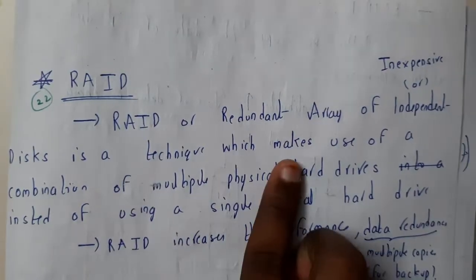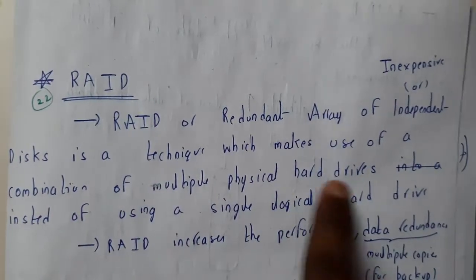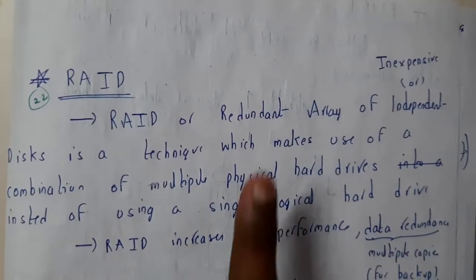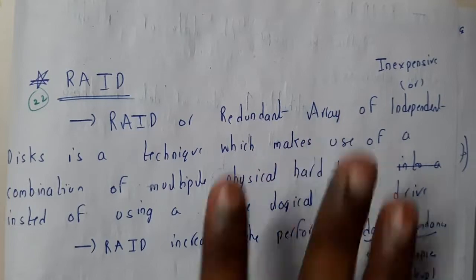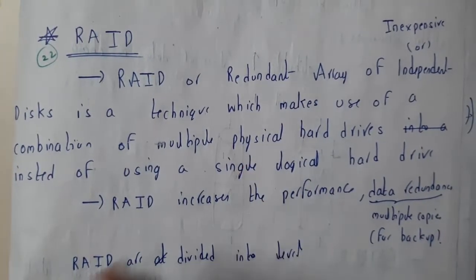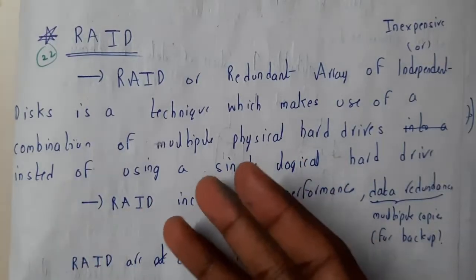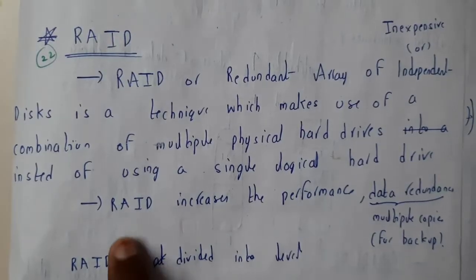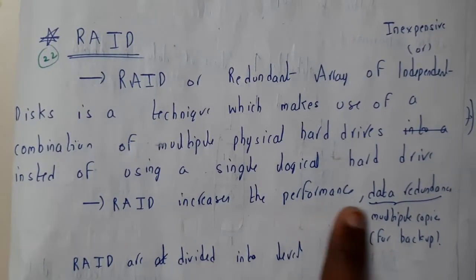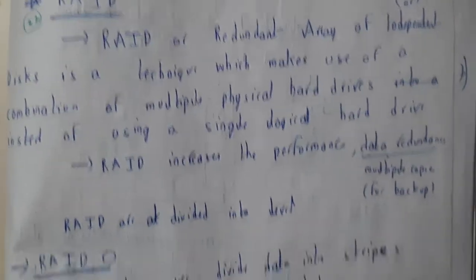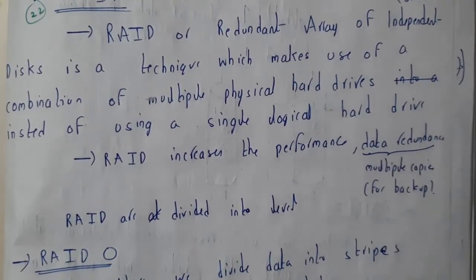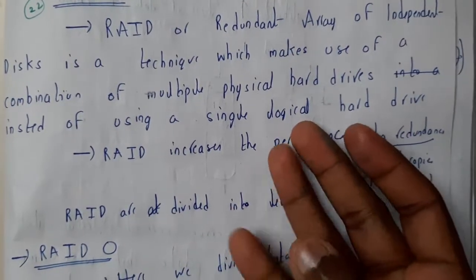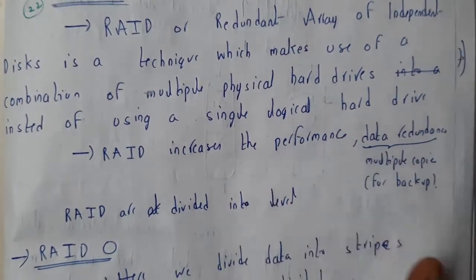RAID — Redundant Array of Independent Disks — is a technique which makes use of a combination of multiple physical hard disks. Instead of using a single logical hard disk, we use 2 to 3 disks but the result will be the same. The accessing time will be reduced, we can have multiple copies for backup, and RAID increases the performance and data redundancy.